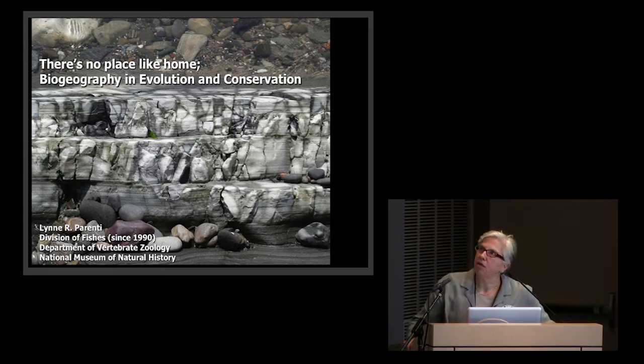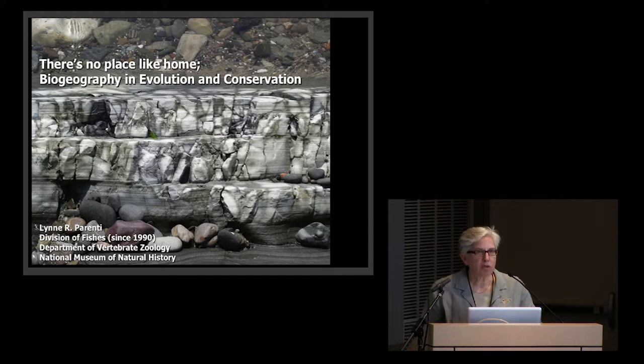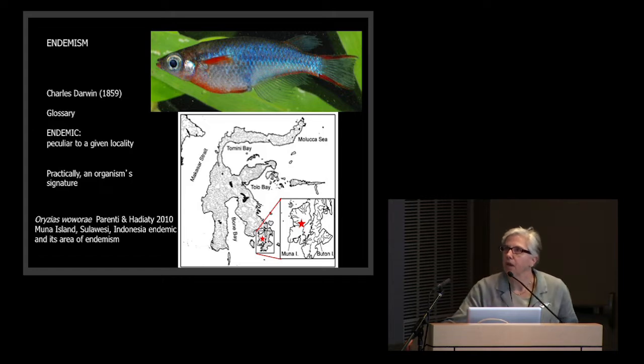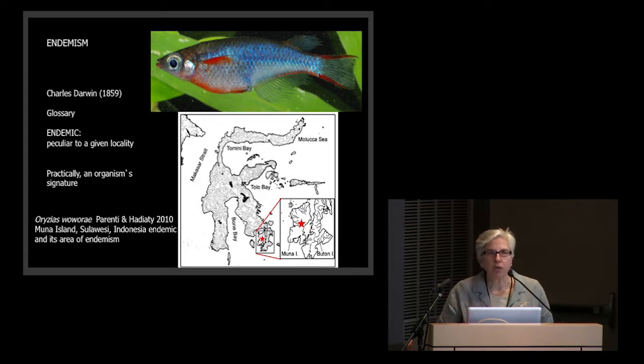The first part of the title, There's No Place Like Home, refers to a very critical concept within evolutionary biology and biogeography, and that's called endemism. Darwin, in his volume on the origin of species, has an entry in his glossary for endemic, meaning peculiar to a given locality.